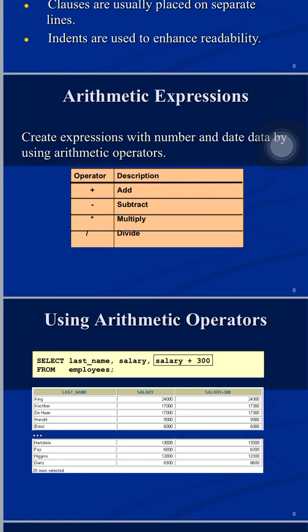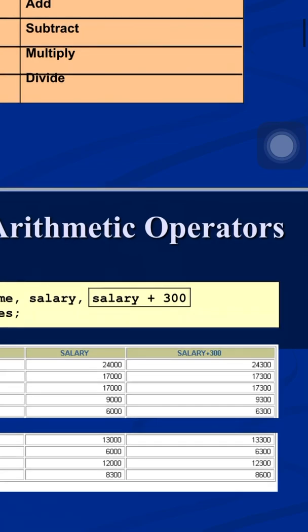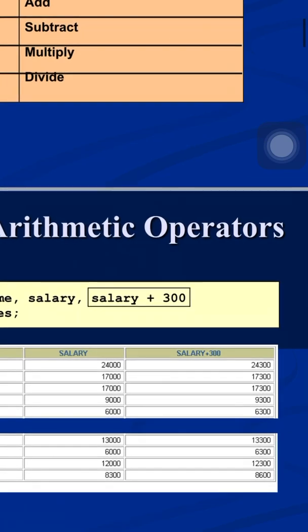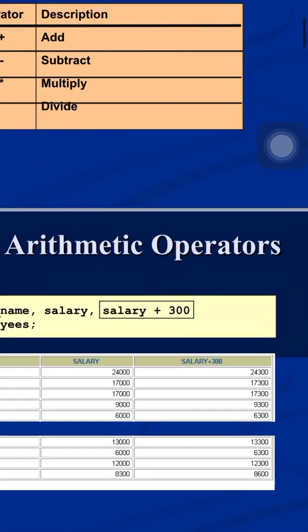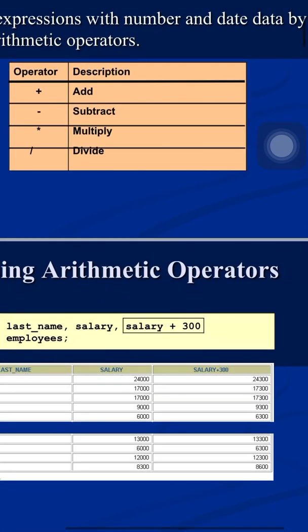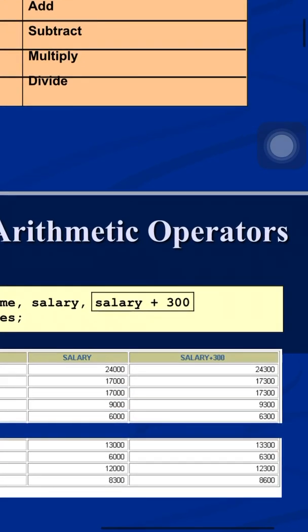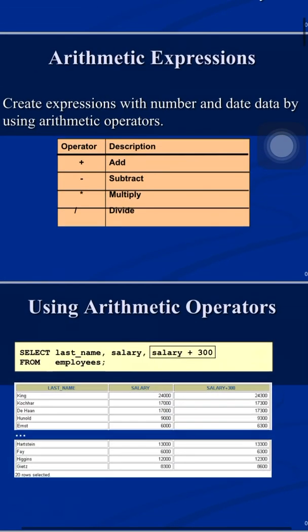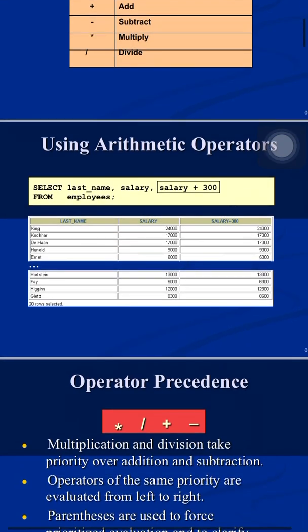In the output, you can see the salary column printed alongside the salary + 300 expression for all rows. For the column header of an arithmetic expression, the entire expression itself — salary + 300 — is printed in capital letters as the column heading. For regular columns, the column name is used as the heading.